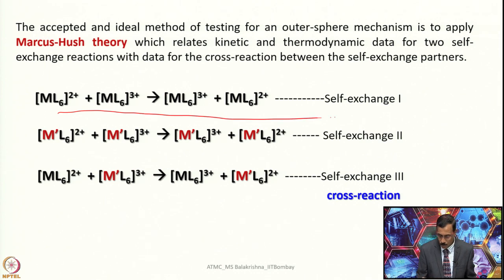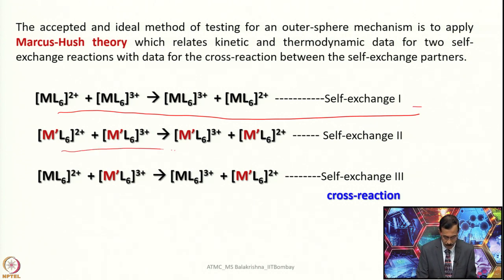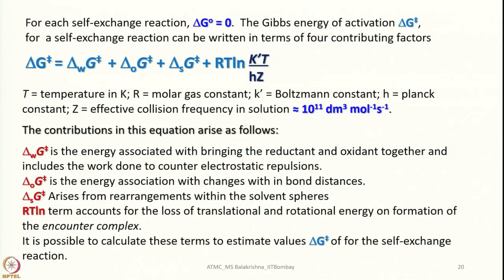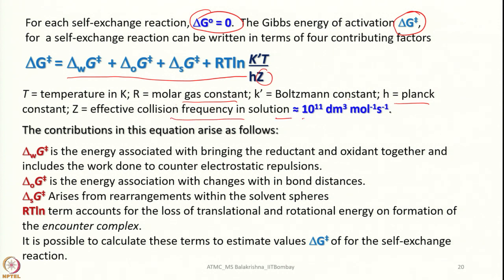For example, looking at the first reaction: we perform a self-exchange where both species are unlabeled (self-exchange 1), another where both species are labeled (self-exchange 2), and then the cross reaction where one is labeled and one is not (self-exchange 3 / cross reaction). For each self-exchange reaction, ΔG = 0. The Gibbs energy of activation can be given by a following expression. Four terms contribute to the Gibbs energy of activation: R is the molar gas constant, K′ is the Boltzmann constant, H is Planck's constant, and Z refers to effective collision frequency in solution, on the order of 10¹¹.